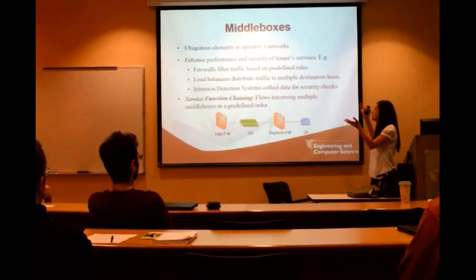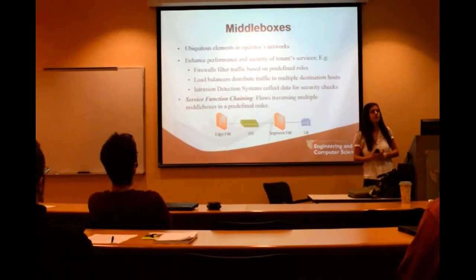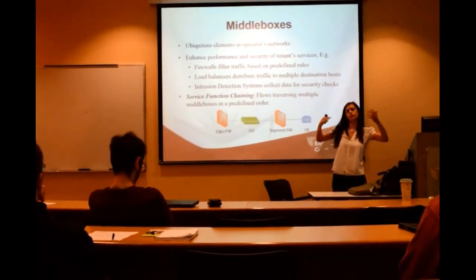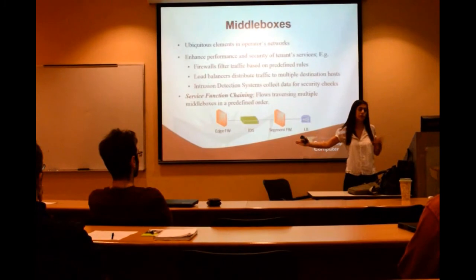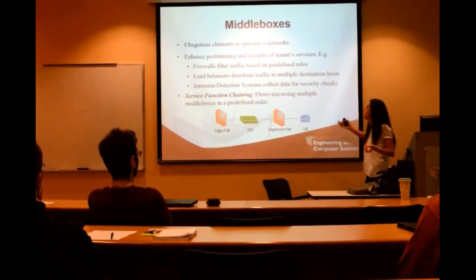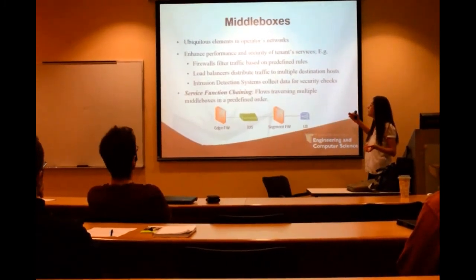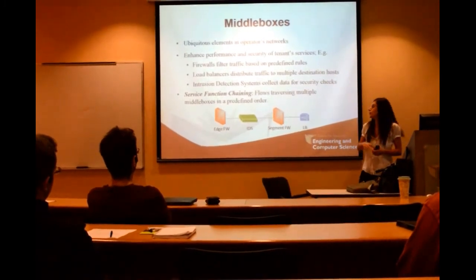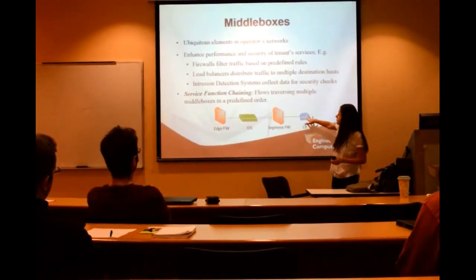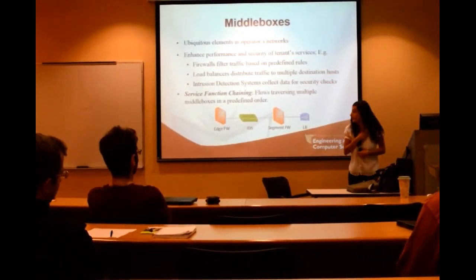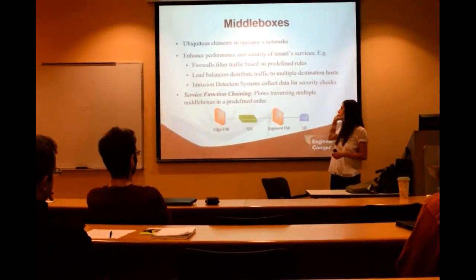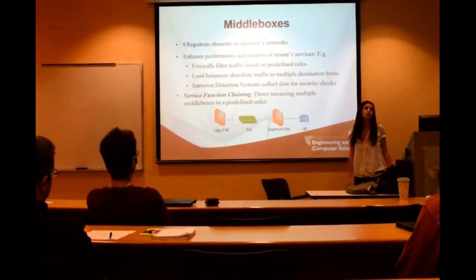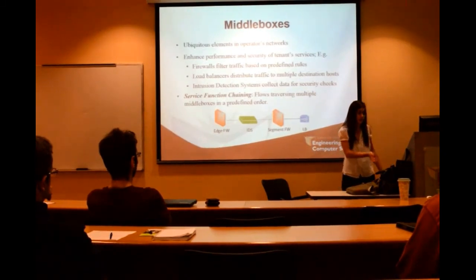Middleboxes are ubiquitous elements in the data center network. There is actually a study showing that there are as many middleboxes as there are routers in the data center network. They enhance the performance and security; for instance, the network can dictate that all traffic coming to a server application must go through a firewall. And usually flows go through a chain of middleboxes — for example, a flow might go through an edge firewall, an intrusion detection system, another center firewall, then a load balancer, and then it reaches the application.